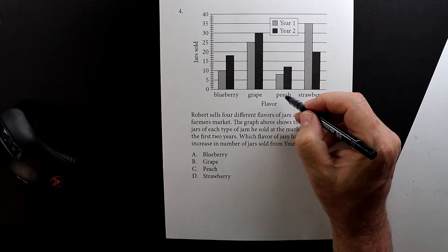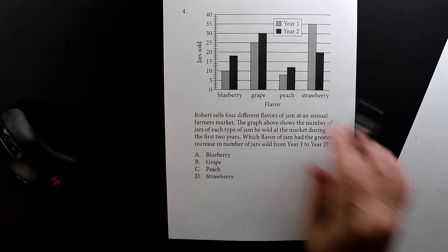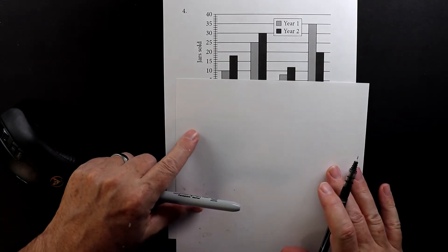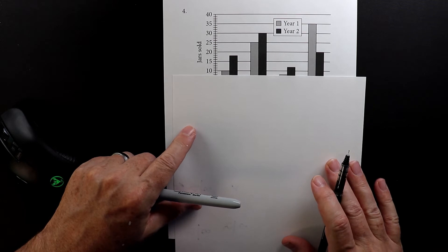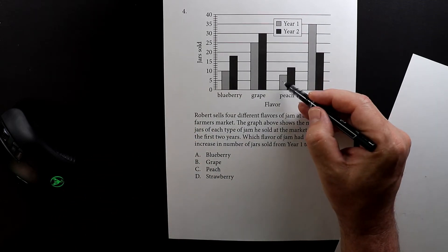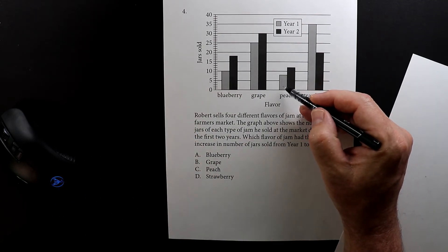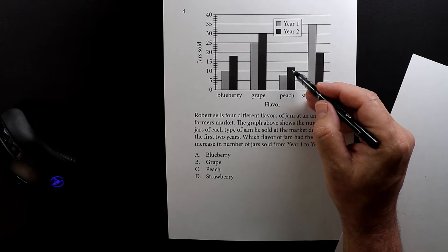Now for peach, this looks like an eight, let's just be sure, yep. So he sold eight jars of peach the first year and then the second year he sold 12. So he went from eight to 12.